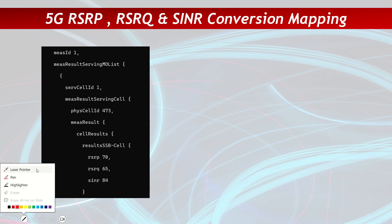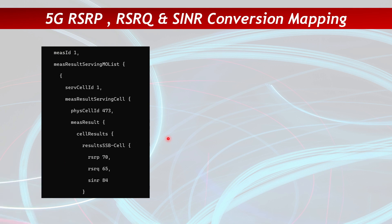Another common question I'm getting is about the 5G RSRP, RSRQ, and SINR conversion mapping. Basically, when a UE mobile needs to perform any action which requires a measurement report, it sends the RSRP and RSRQ values to the gNodeB, telling it what its current signal level is.